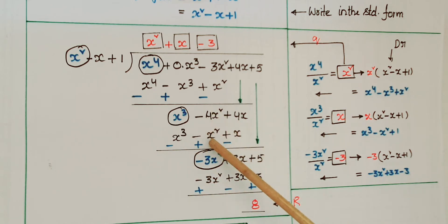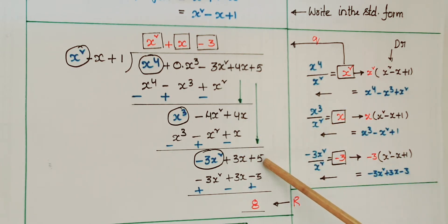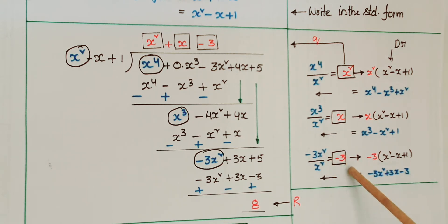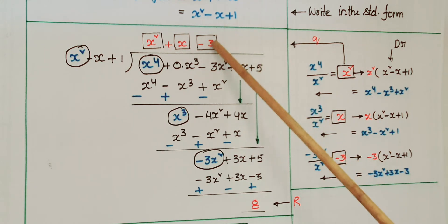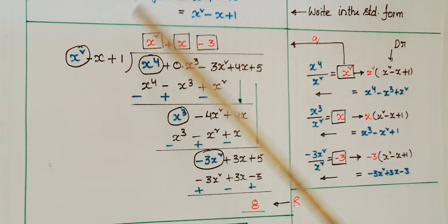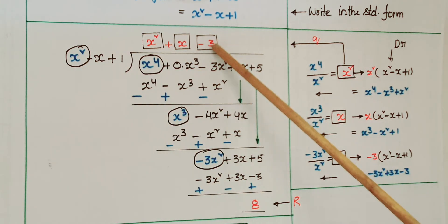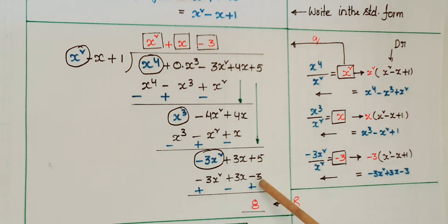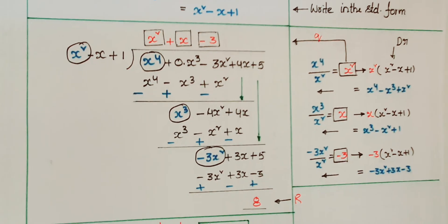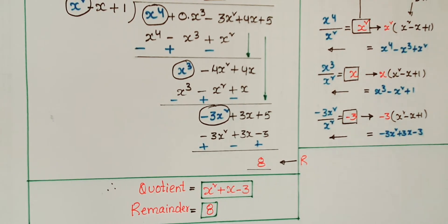-4x² + x² = -3x², and 4x - x = 3x. Bring down the constant +5. Take -3x² divided by x² = -3. Write -3 at the quotient place. Multiply -3 with (x² - x + 1): -3x² + 3x - 3. Change signs and subtract: -3x² + 3x² = 0, 3x - 3x = 0, and 5 + 3 = 8. The remainder is 8. Quotient = x² + x - 3, remainder = 8.